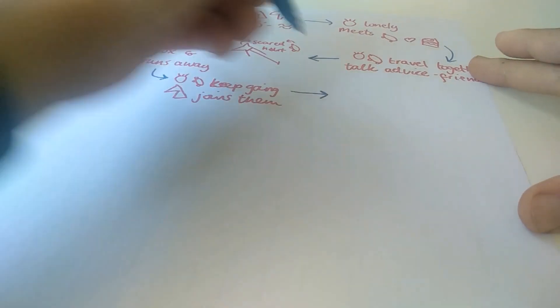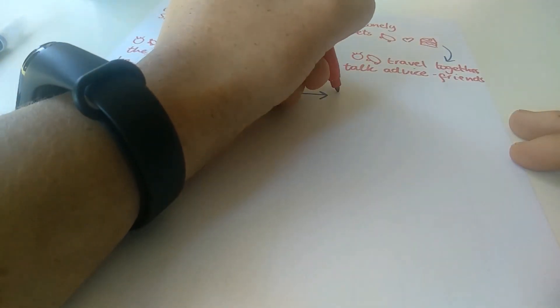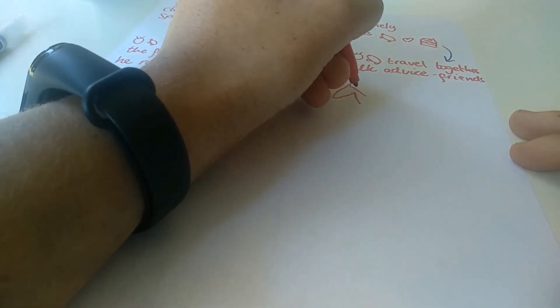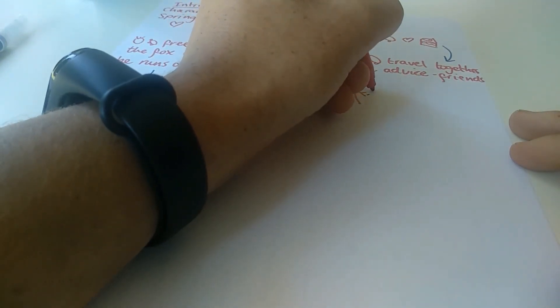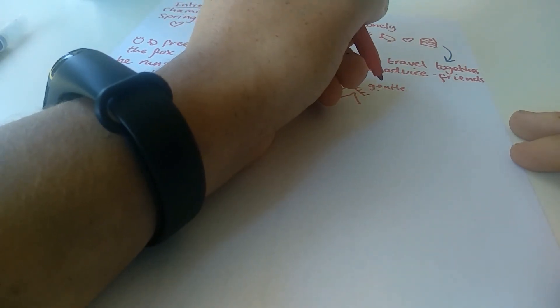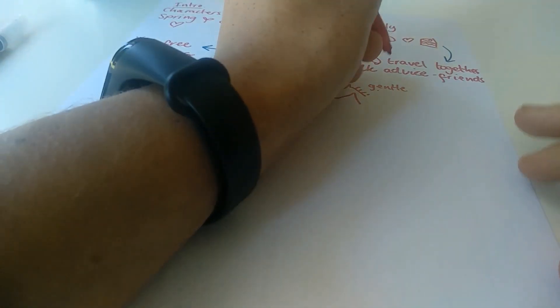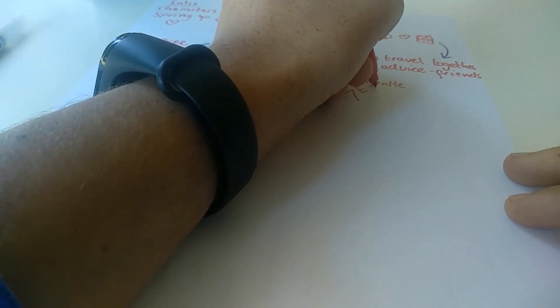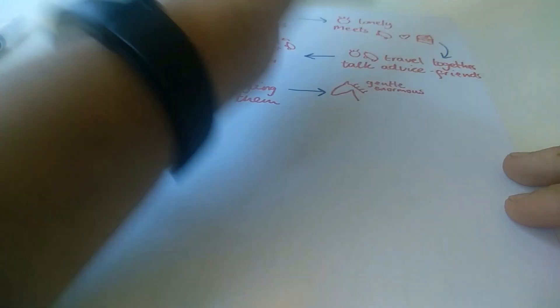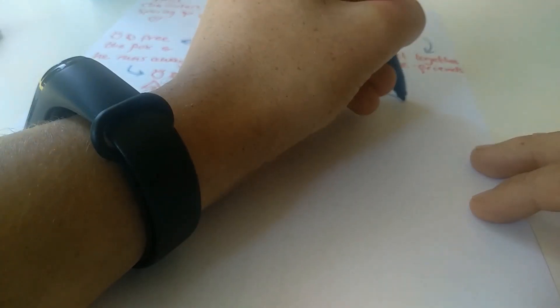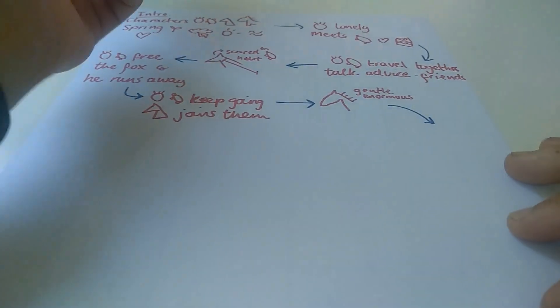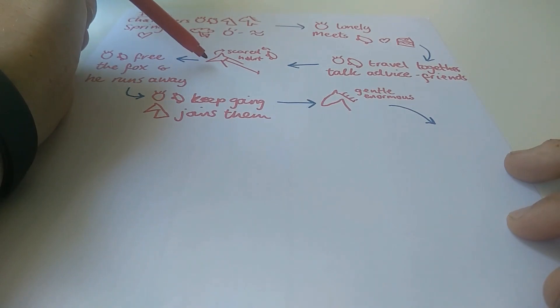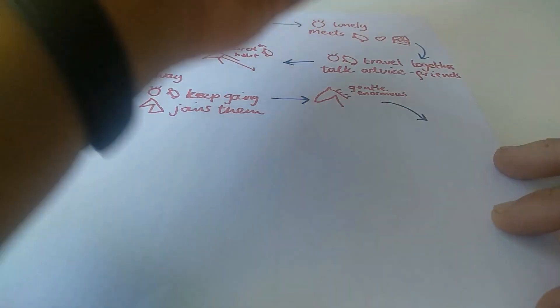And the next animal that they meet is the horse, who is very large, very gentle. So, I'm going to add in gentle. I want to pick a better word than big. That's quite basic. I think we can use better adjective there. Let's see. Enormous. And they all, four of them together, we've now met our boy, our mole, our fox, and now the horse. And they all travel together.